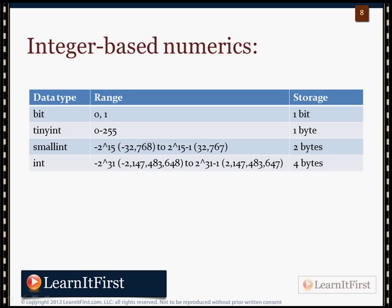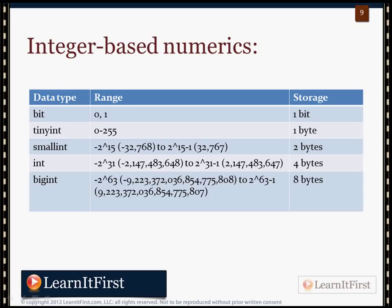Focus on the negative 2 billion to positive 2 billion range for int — remember that. Then bigint: counting up through thousands, millions, billions, trillions, quadrillions, quintillions — it's negative 9 quintillion to positive 9 quintillion. That's a pretty big range. It takes up eight bytes.